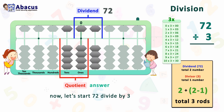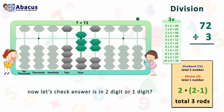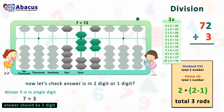Here is the table of 3. Before starting, let's set dividend 72 on the right side from the unit rod. Now let's check whether the answer is two digit or one digit, because there is a possibility the answer could be one digit. The divisor 3 is single digit, so we compare it with the first digit of the dividend. Here dividend 7 is bigger than divisor 3, so as per our rule, the answer should be in two digits.